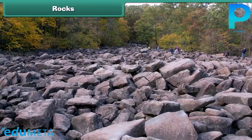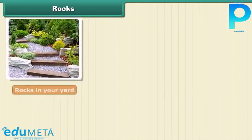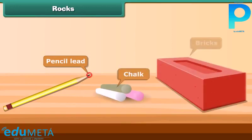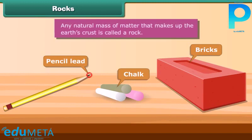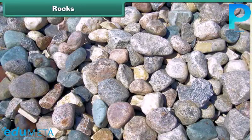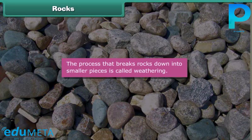Rocks are all around us. You can see rocks in your yard, on your street, on a road, everywhere you look. Pencil lead, chalk, and bricks are all rocks. Any natural mass of matter that makes up the earth's crust is called a rock. Do you know sand and mud are also rocks? Rocks can be of different size and color. The process that breaks rocks down into smaller pieces is called weathering.